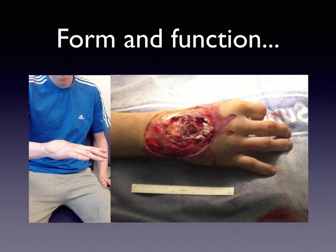A complex injury with loss of dorsal wrist capsule, wrist extensors, finger extensors and soft tissue can be dealt with by staged reconstruction, recreating the soft tissue envelope and the tendons that are necessary — achieving both form and function.